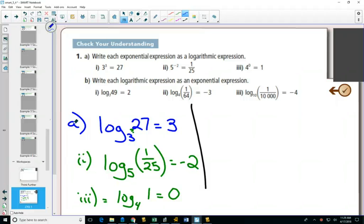For part B, each of those are logarithms. Log₇49 equals 2, while the base is 7, the exponent is 2, it's equal to 49.